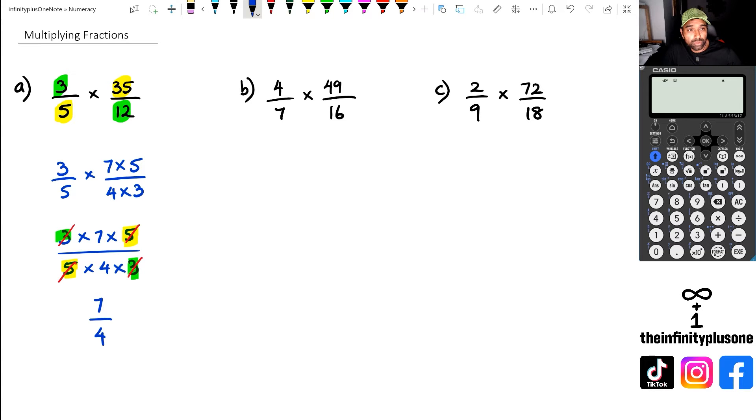So if you look at that top number, 3 fifths times 35 over 12, that's actually equal to 7 over 4. Let's just check it out in the calculator. So if I actually do 3 fifths, and then I'm going to multiply it with 35 over 12. Now what the calculator does is it actually gives you the simplified answer, which is 7 over 4. And as you can see, just another way for us to get 7 over 4 using it without a calculator.